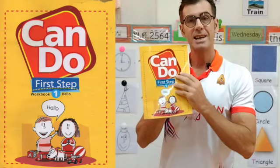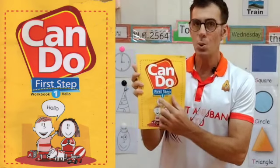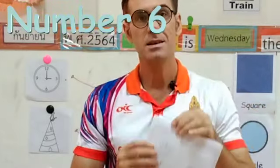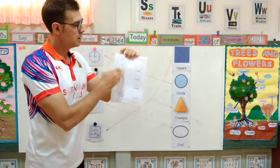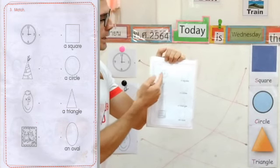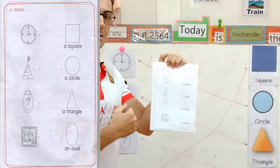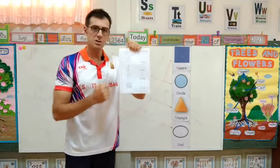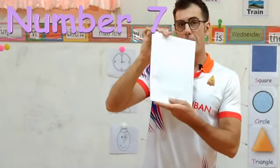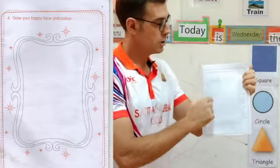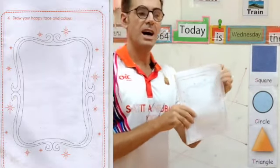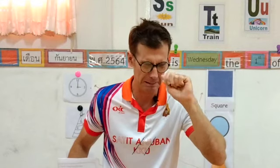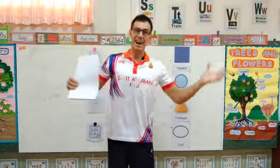Worksheet — can do workbook, page number six. Match the object with its proper shape like this. Color nicely the pictures, page number seven. Draw the picture of a happy face. Is this happy? No. Is this happy? No. Is this happy? Yes.